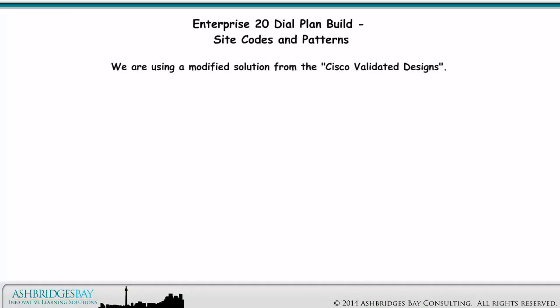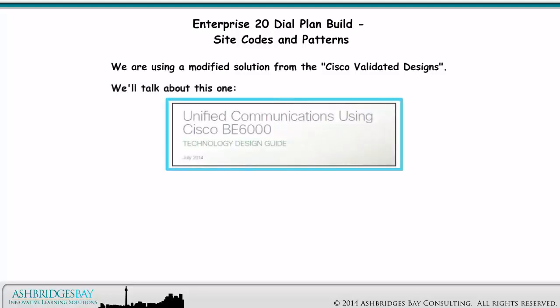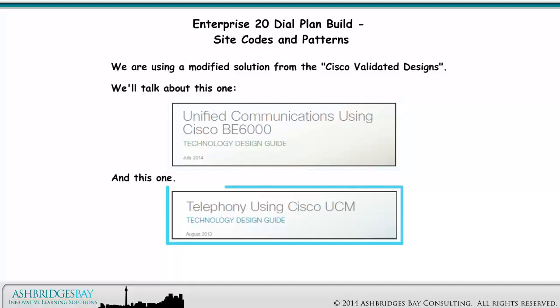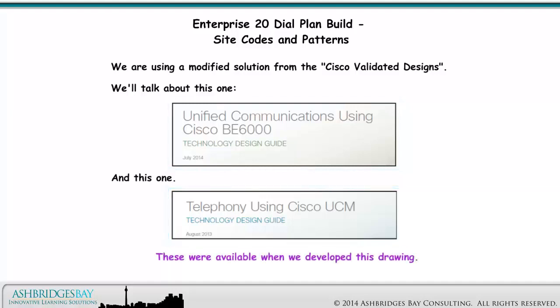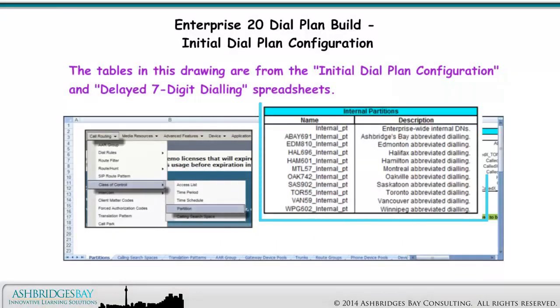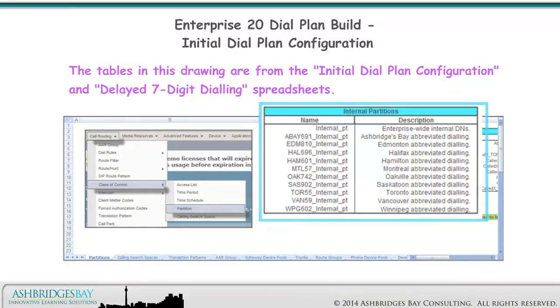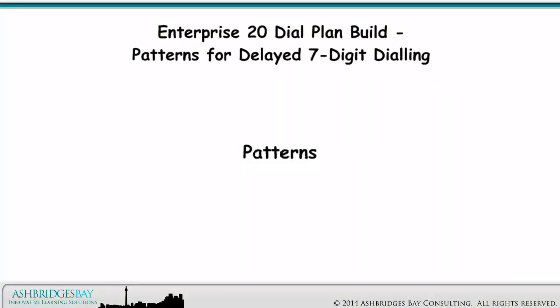We are using a modified solution from the Cisco Validated Designs. We'll talk about the Cisco BE6000 CVD and the Telephony Using Cisco UCM CVD. These were available when we developed this drawing. The tables in this drawing are from the initial dial plan configuration and delayed 7-digit dialing spreadsheets. Everything starts with patterns.